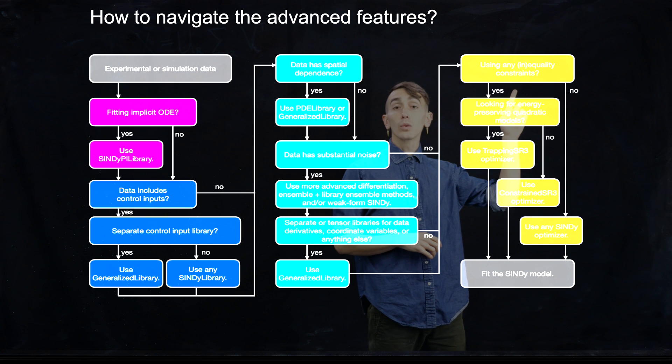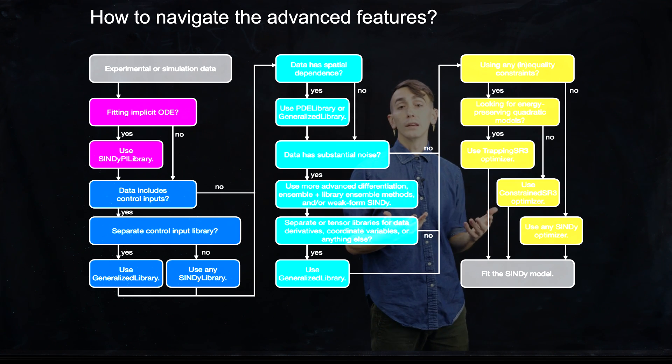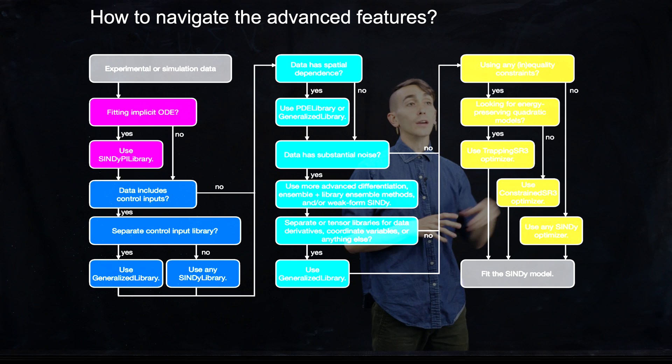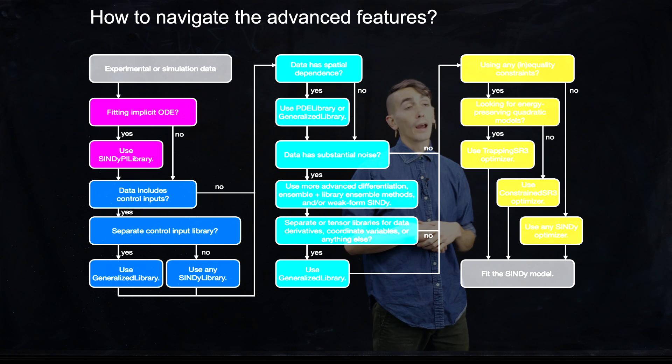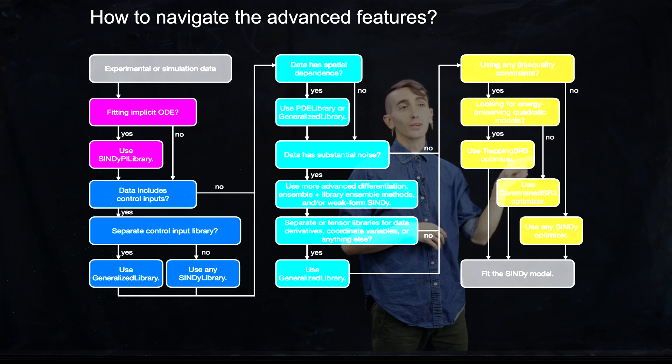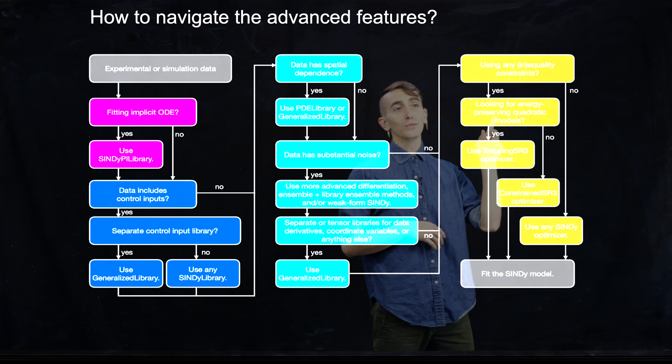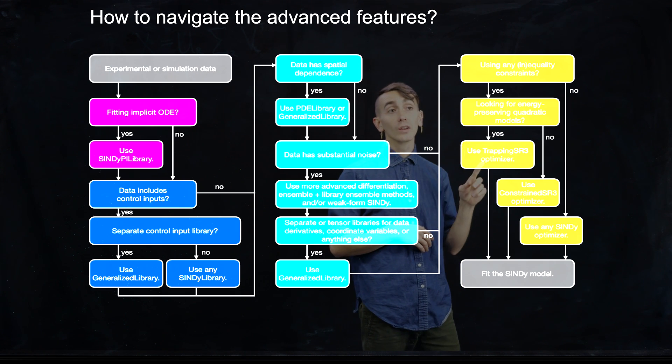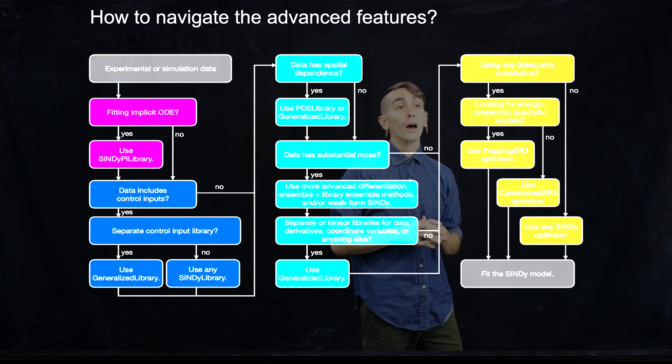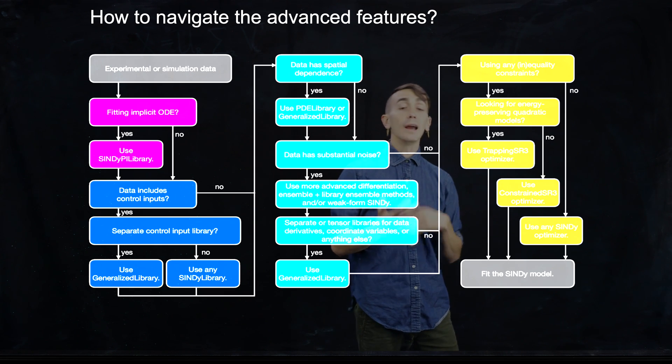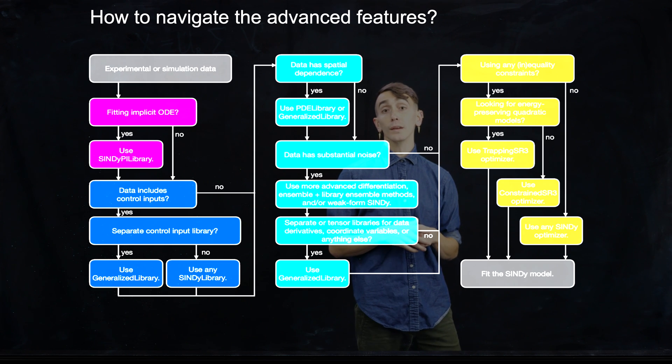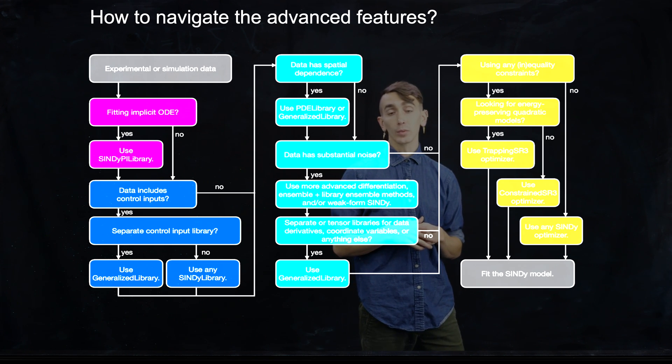And then last thing that we're asking is, are we building in any physical priors with equality or inequality constraints on our model? If we're not building any physical priors in, we can just use any SINDy optimizer that we want. And otherwise, you can follow this more particular chain. So if you're looking for specific energy preserving quadratic models, you can use this trapping SR3 optimizer. I've talked about trapping SINDy in another one of my videos. But otherwise, you can just use the constrained SR3 optimizer, which allows for any general equality or inequality constraint that you want on the dynamics.